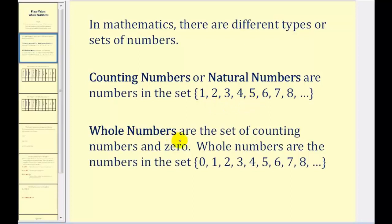Whole numbers are the set of counting numbers and zero. So whole numbers are the numbers in the set as we see here, and the only difference is whole numbers include zero, while counting numbers don't.